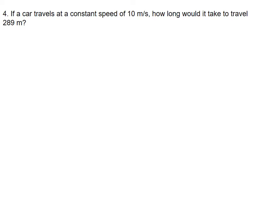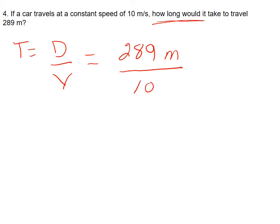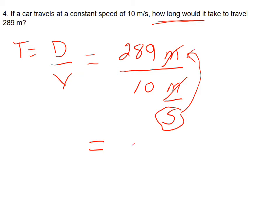Problem 4: If a car travels at a constant speed of 10 meters per second, how long would it take to travel 289 meters? We're solving for time, so the equation is time equals distance divided by velocity. That's 289 meters divided by 10 meters per second. The meters cancel, and you get 28.9 seconds.